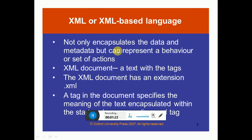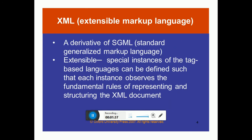XML not only encapsulates data and metadata but can also represent behavior or a set of actions. An XML document consists of text within tags — whenever there are two tags, it documents the text between them. The XML document extension is .xml. Extensible Markup Language is a derivative of SGML — Standard Generalized Markup Language. 'Extensible' means it extends special instances of the tag; tags can be defined by ourselves, they are not predefined.